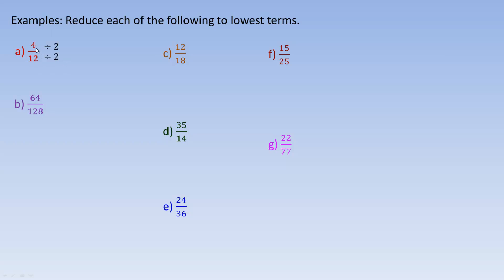For 4/12, both are even, so divide by 2: 4 divided by 2 is 2, and 12 divided by 2 is 6. But those are both even too, so divide by 2 again: 2 divided by 2 is 1, and 6 divided by 2 is 3. So 1/3 is the lowest terms of 4/12 — there's no common factor for 1 and 3. Since I divided by 2 twice, 2 times 2 is 4, so dividing 4 by 4 and 12 by 4 gets you there directly.